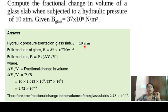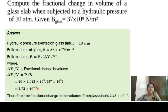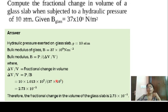δV/V equals P/B. Converting: 10 atmosphere equals 10 × 1.013 × 10⁵ N/m². Dividing by B equal to 37 × 10⁹: δV/V equals (10 × 1.013 × 10⁵) divided by (37 × 10⁹), which gives 2.73 × 10⁻⁵. So the fractional change in volume is 2.73 × 10⁻⁵. Note that 1 atmosphere equals 1.013 × 10⁵ N/m².